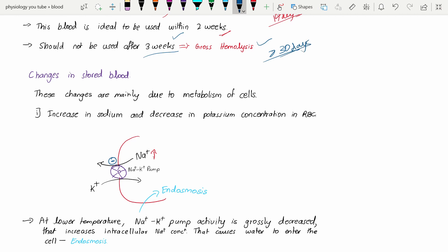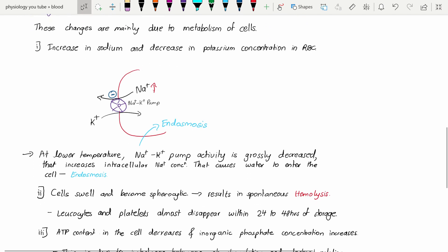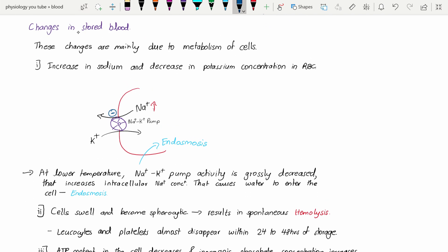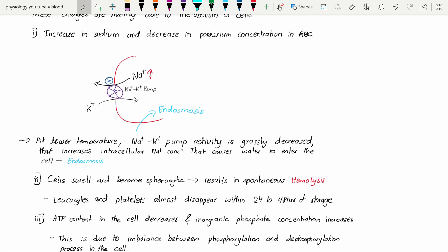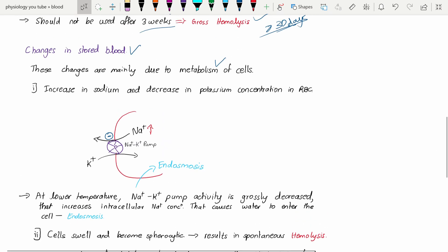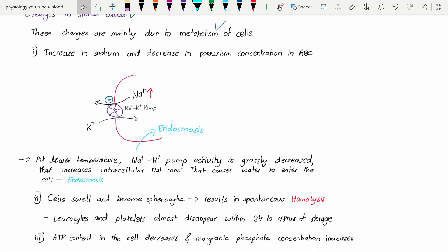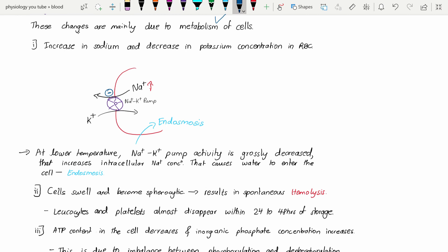What are the changes that happen within stored blood? These changes are mainly due to the metabolism of the cells. This blood is alive, so there occurs metabolism even when stored at very low temperature. There is an increase in sodium but decrease in potassium concentration in RBCs.